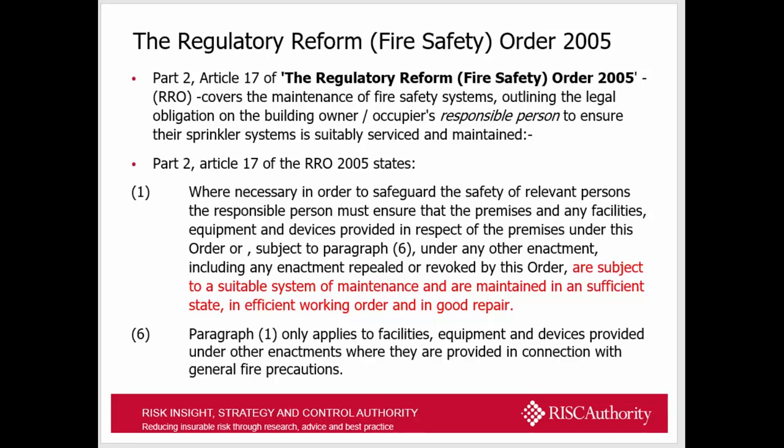The Regulatory Reform Fire Safety Order, specifically Part 2 Article 17, states that if you have a fixed firefighting system on premises, it is subject to a suitable system of maintenance, and it must be maintained in a sufficient state, in efficient working order, and in good repair. That is a legal requirement. So if you have a sprinkler system on your premises, it should be serviced and maintained.